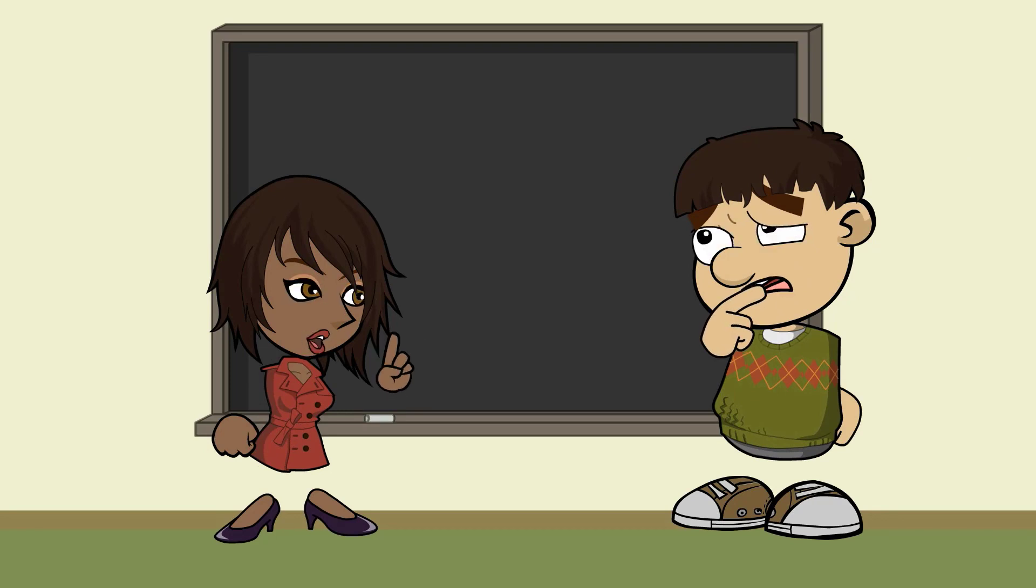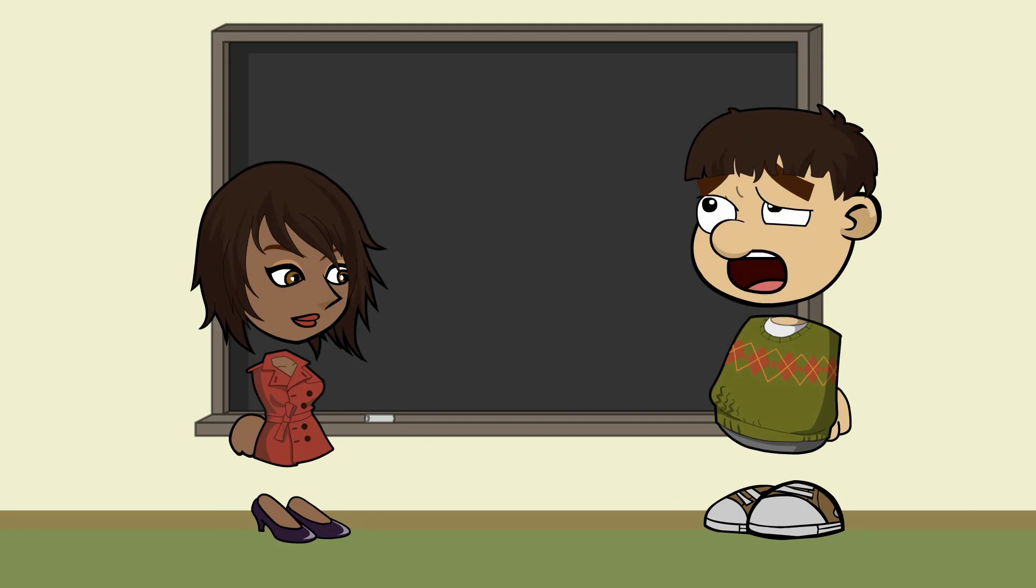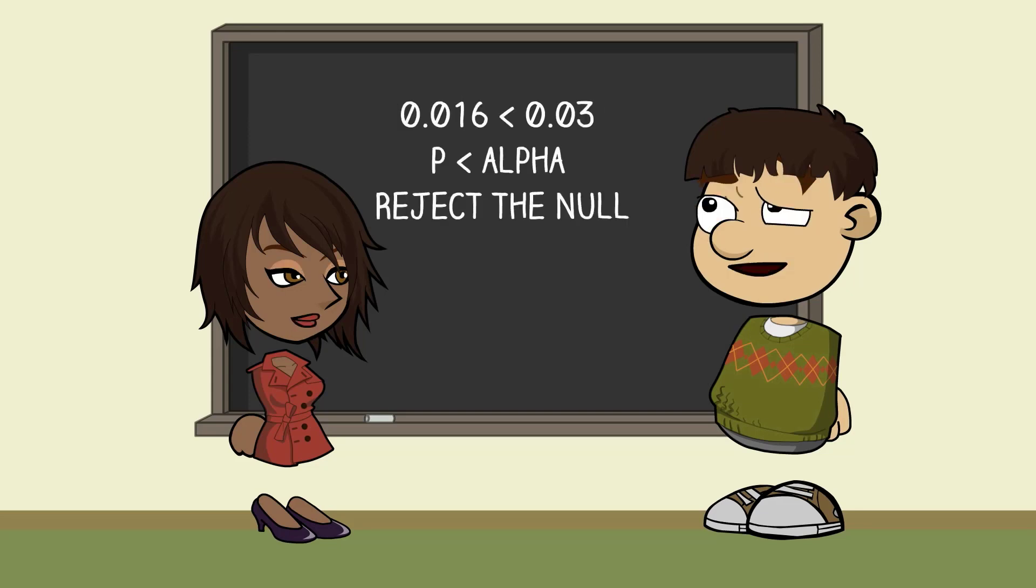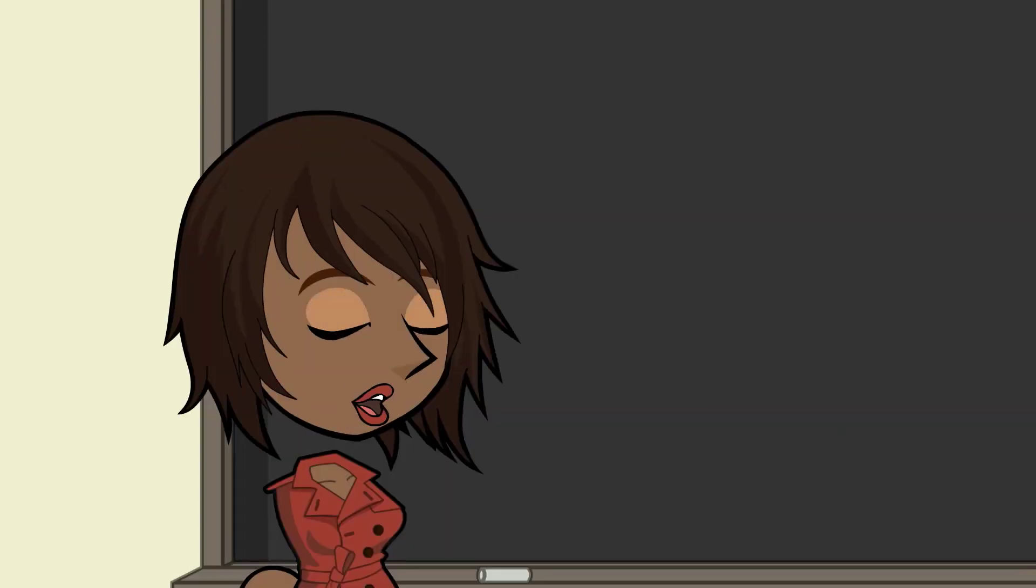But what if we got seven heads in a row? That would be more unusual but it would not change my mind about rejecting the null. I have enough evidence at six to believe the coin is not fair. So, the p-value for this experiment is 1.6%, which is the probability of getting six or more heads in a row out of six tosses. You are starting to make my mind hurt. But I see the p-value is less than alpha. That means I should reject the null hypothesis that the coin is fair. That is correct.